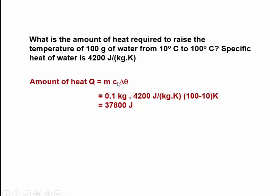The specific heat of water is 4,200 joules per kilogram per Kelvin, and the change in temperature is 100 minus 10, that is 90. Now work out this multiplication and see if you get 37,800 joules.